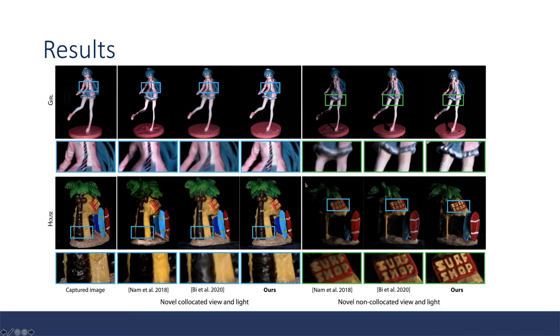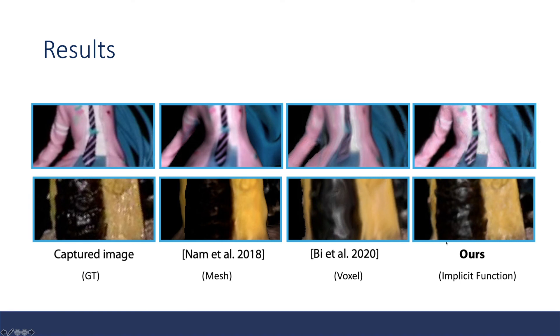Here are some quality results. This is the comparison with prior works. The Nam et al. is a mesh-based method, and Bi et al. is the voxel-based method. If you compare the details, this neural reflectance field using implicit function can capture more high resolution details.